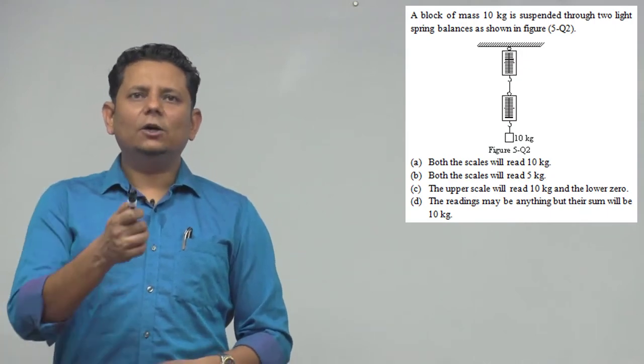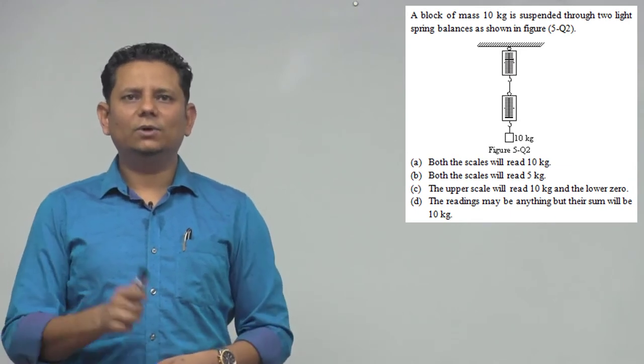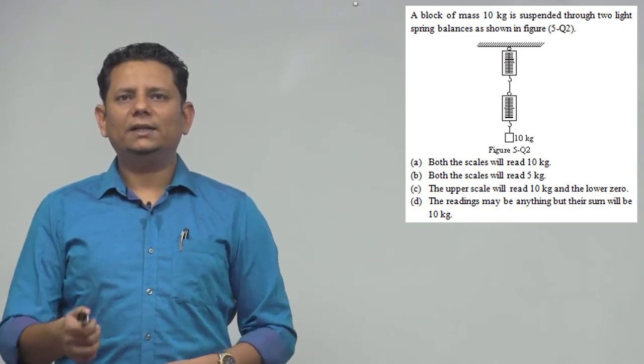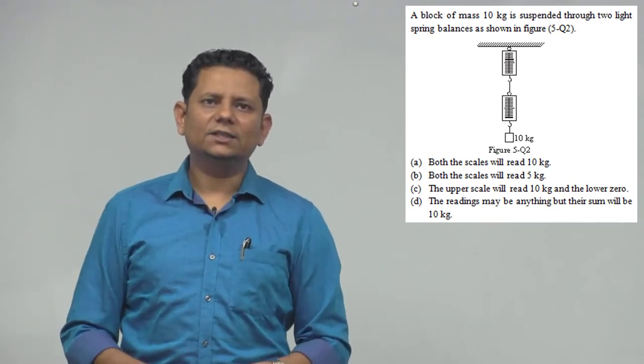Both scales will read 10 kg, both scales will read 5 kg, upper scale will read 10 kg and lower 0, or the reading may be anything but their sum will be 10 kg. The right answer will be option number A.